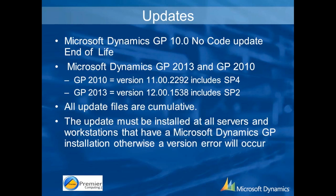It's GP10 this year — it's come to its end of life, so if you're on that, we want you to consider upgrading so that you'll get the necessary code changes. The current versions are GP10 and GP2013, and the updates include Service Pack 4 for GP10 and Service Pack 2 for GP2013. You can see the version numbers up there. All updates are cumulative and need to be installed on all servers and workstations that have GP installed, otherwise you'll get a version error when you start.